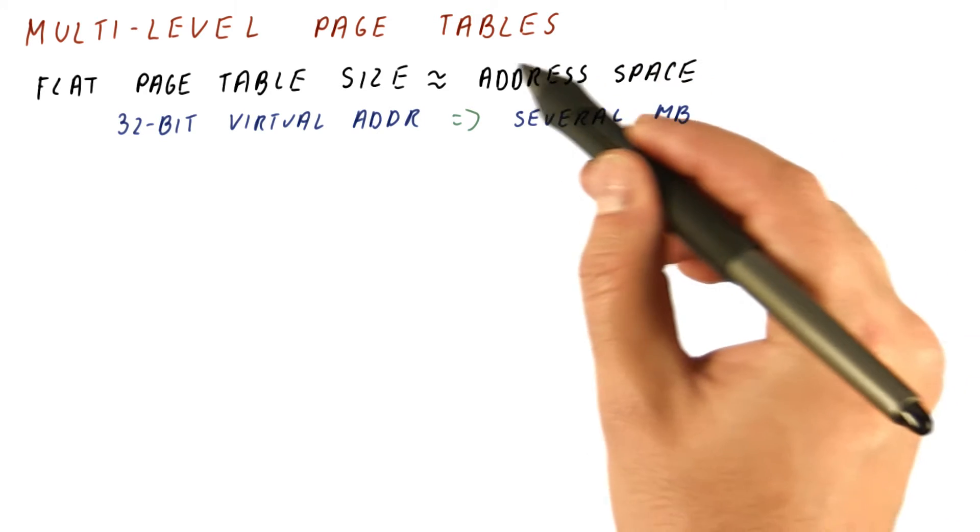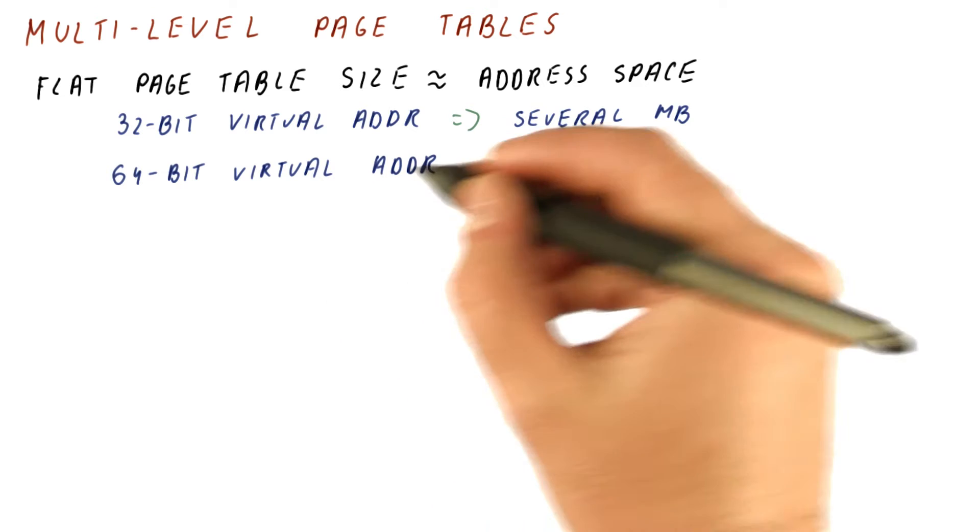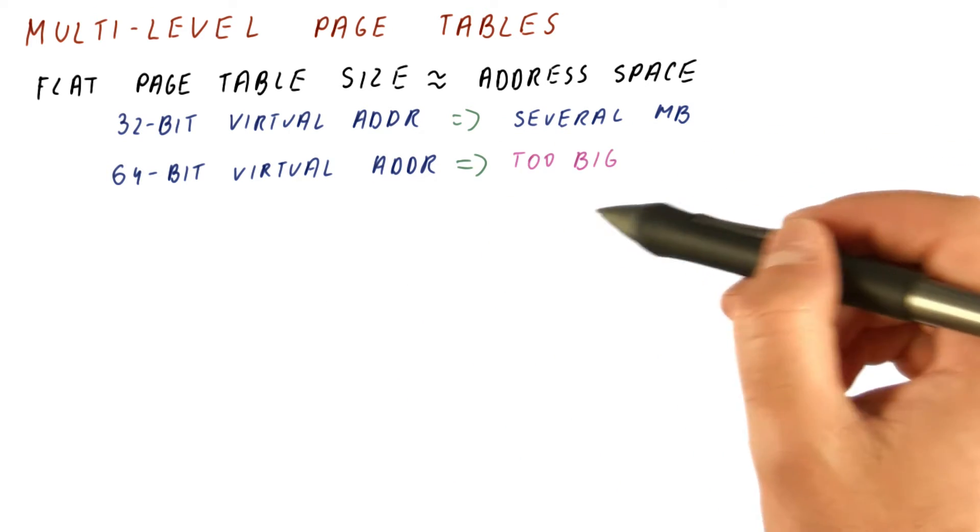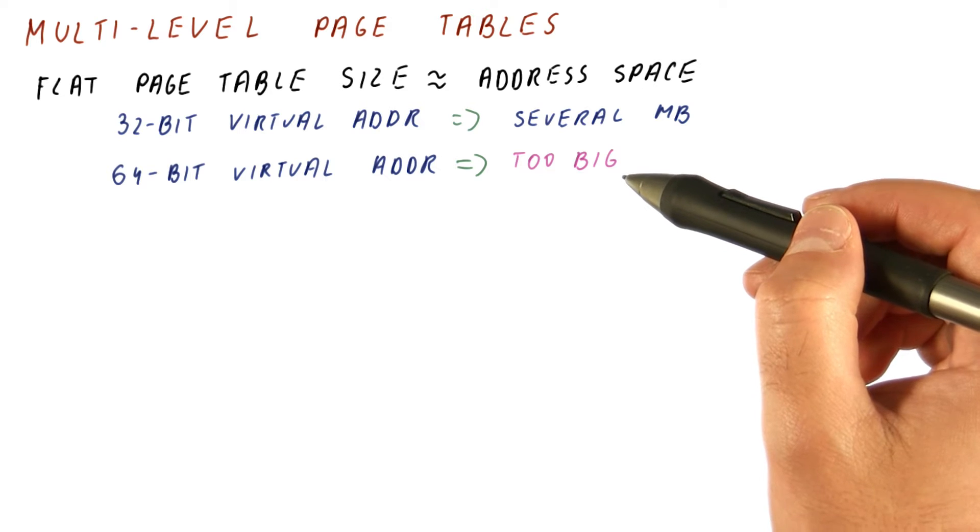It has to do with how much memory can we possibly address. For 64-bit virtual addresses, a flat page table would simply be too big. The page table would be many, many gigabytes in size, so we simply cannot use it because it wouldn't fit in the amount of physical memory we actually have.